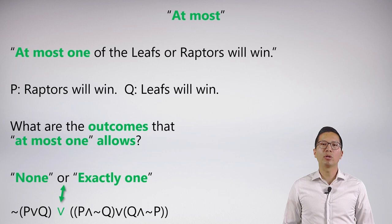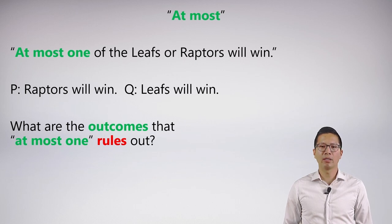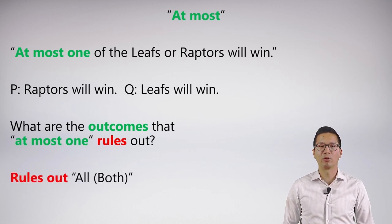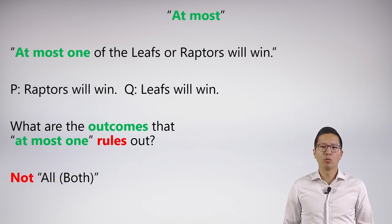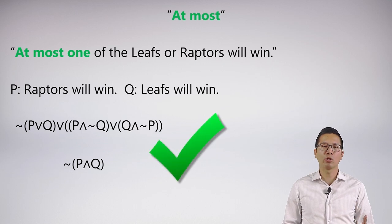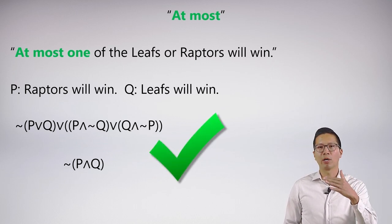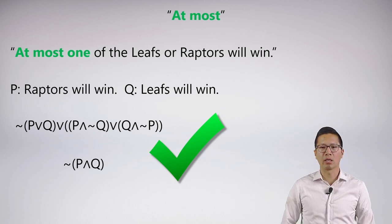Another way of conceiving 'at most one' is to ask what cases it rules out. When I say 'at most one,' it allows for none or exactly one, but it rules out the case where both P and Q obtain. So if we want to rule out the both-case, that's just 'not both,' which we already know how to symbolize. So you can really do it either way — stating allowed cases directly, or negating the ruled-out case.